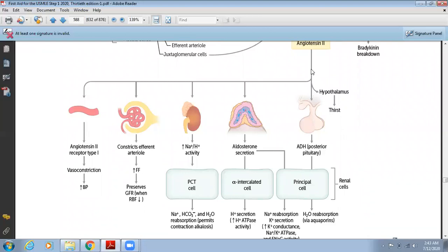The last function of angiotensin II is that it acts on the hypothalamus and causes thirst. When there is thirst, there is release of antidiuretic hormone (ADH) from the posterior pituitary. ADH is also known as vasopressin. The function of ADH is water reabsorption.